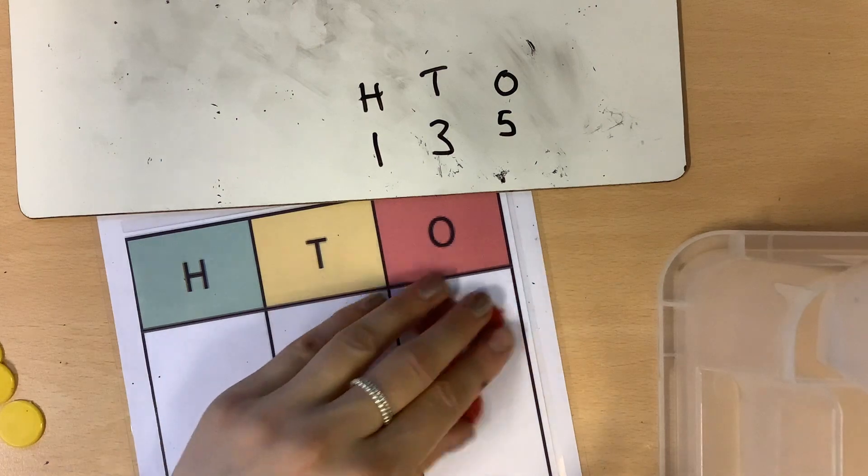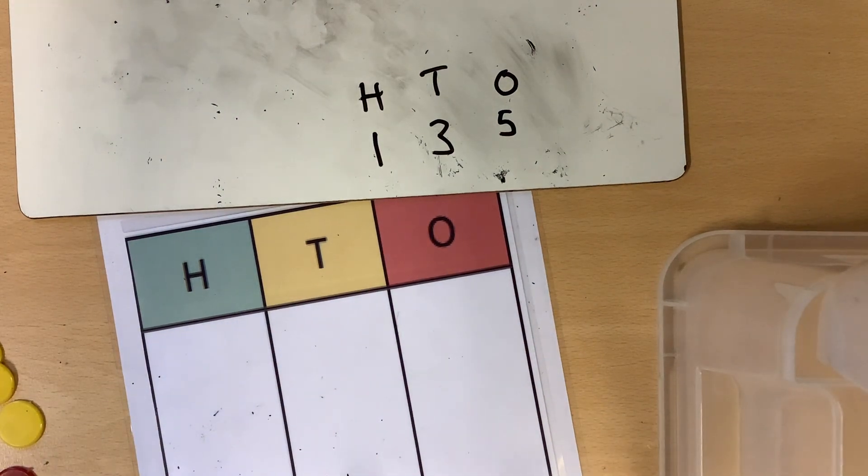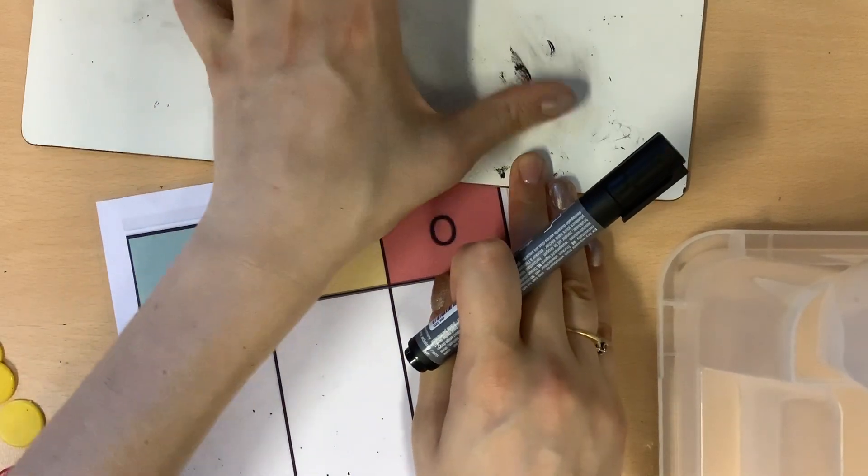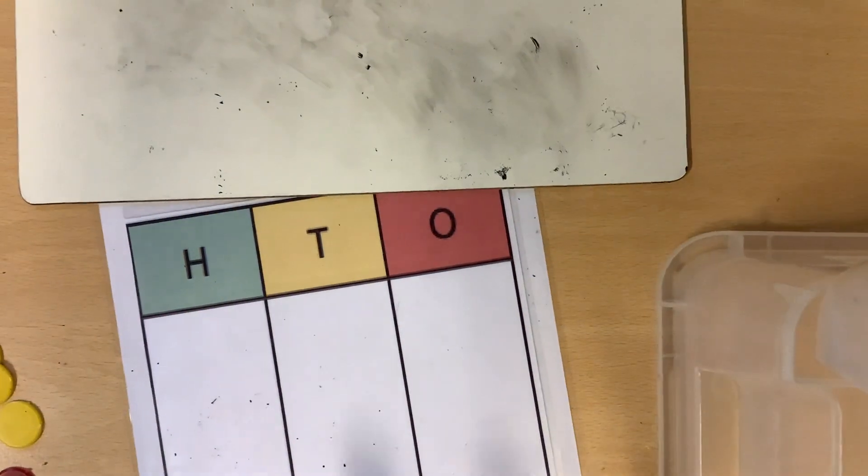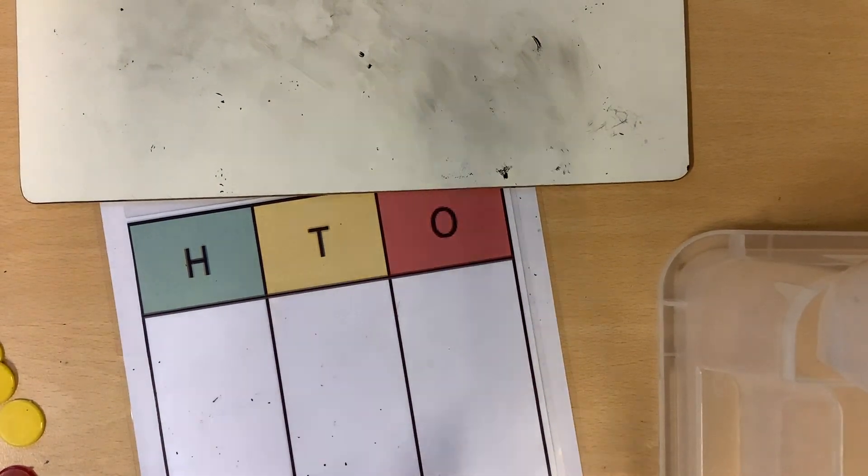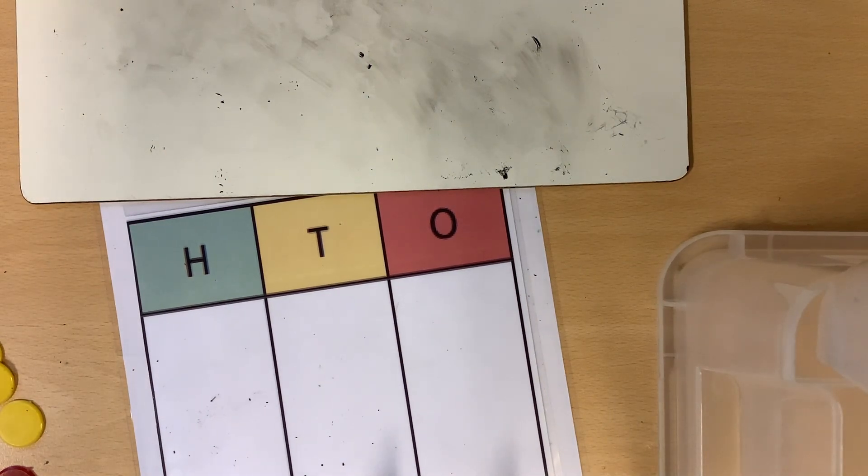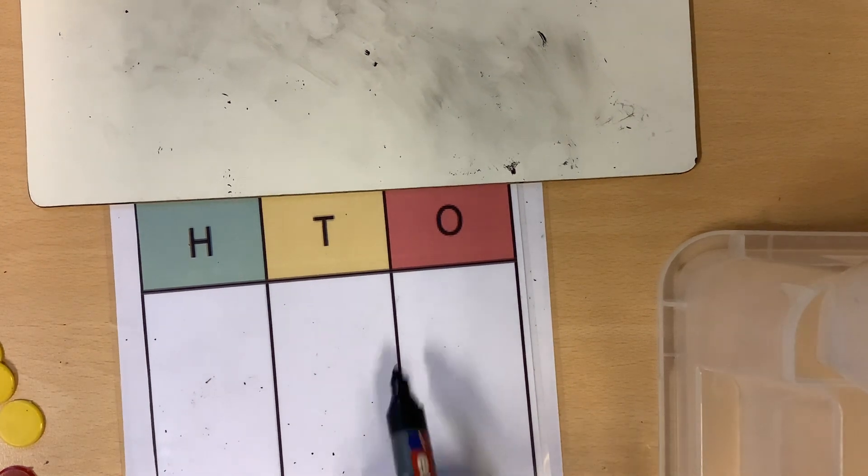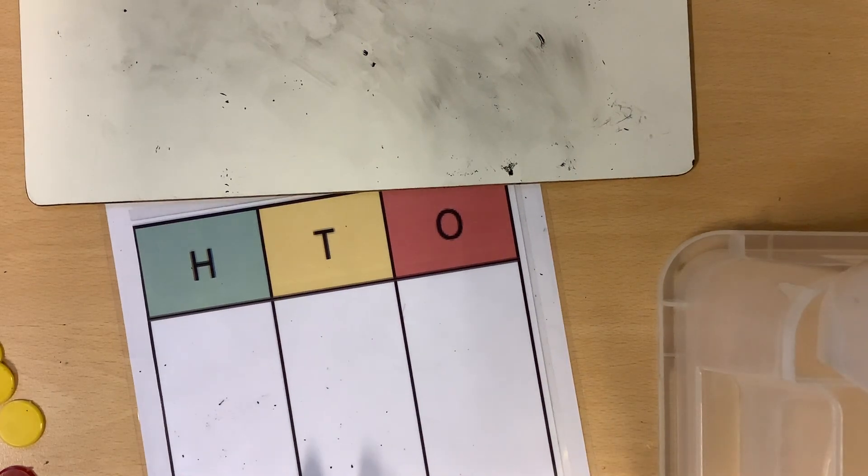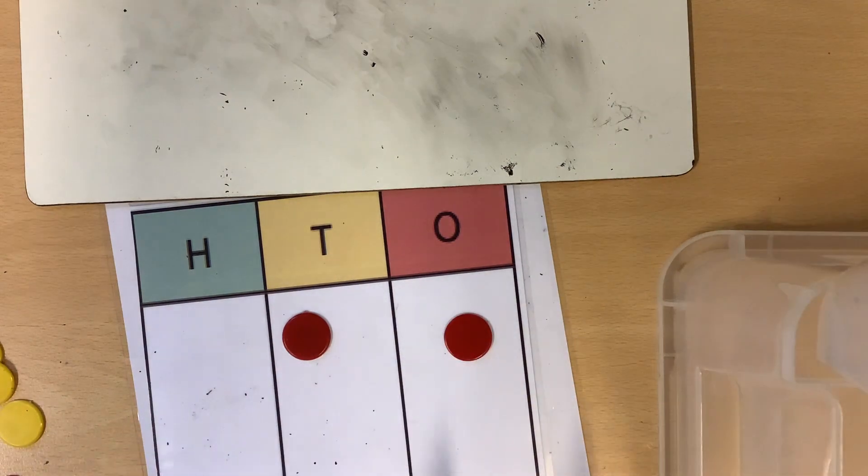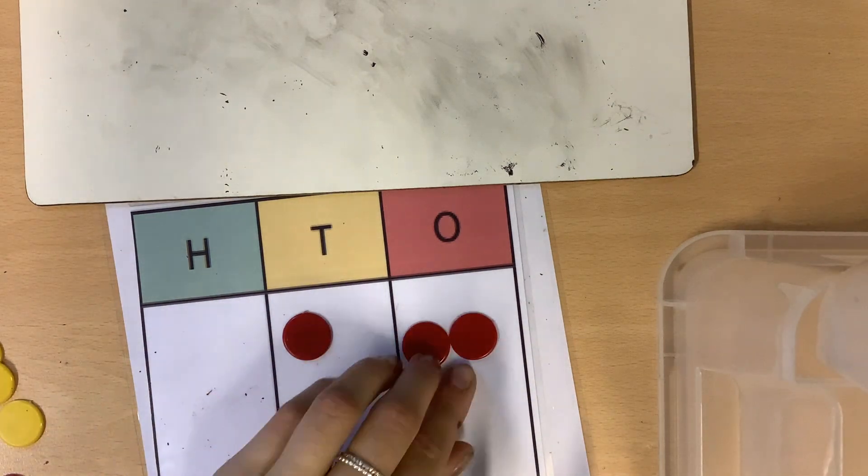So I have just represented numbers using my counters. Now, I'm going to think about representing numbers in a different way now. Rather than just thinking about how many tens and ones there are, I'm going to think about could I represent it using just the ones column? So I'm going to go back to the number.